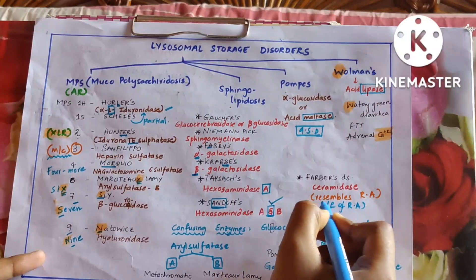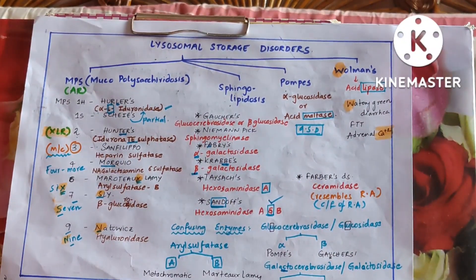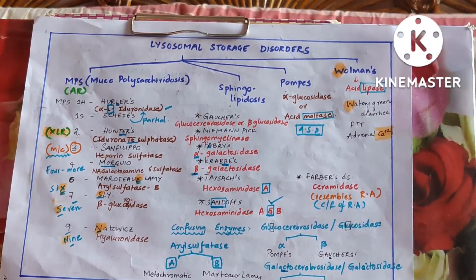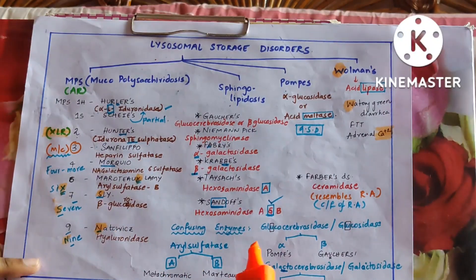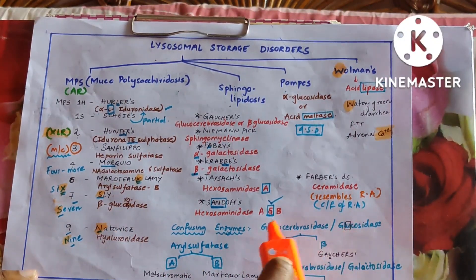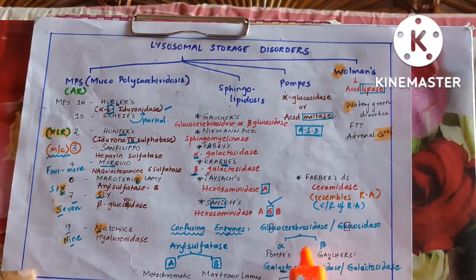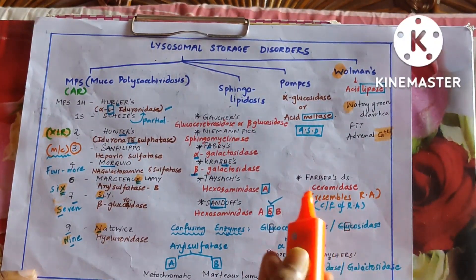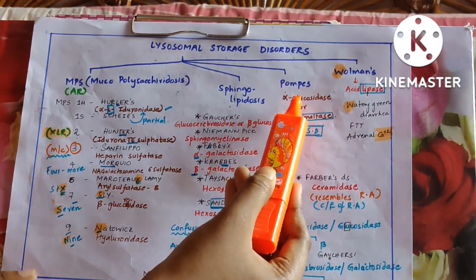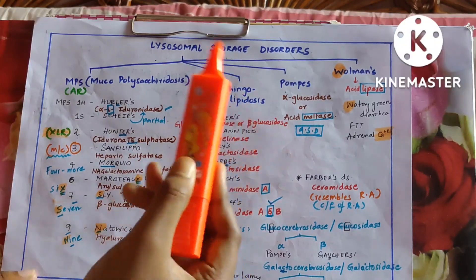Now let us discuss some confusing enzymes. Glucocerebrosidase is otherwise called glucosidase — there is alpha and beta: alpha is Pompe's and beta is Gaucher's. Remember: U for Gaucher's — Gaucher has U in it.